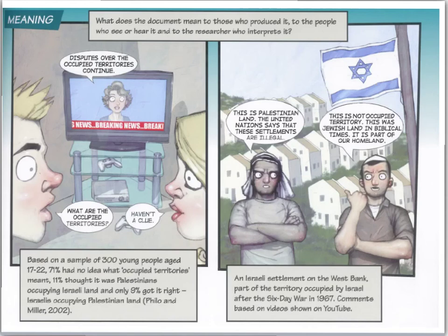Finally, Scott argues that in order to ascertain the meaning of a document, we need to ask what the document means to those who produced it, but also to the people who see and hear it, and how that relates to the way the researcher interprets its meaning. The key issue here, as illustrated by the cartoons on screen, is to be aware that documents are open to multiple interpretations. In other words, to use the jargon, documents are polysemic — they are capable of being read in a variety of different ways.